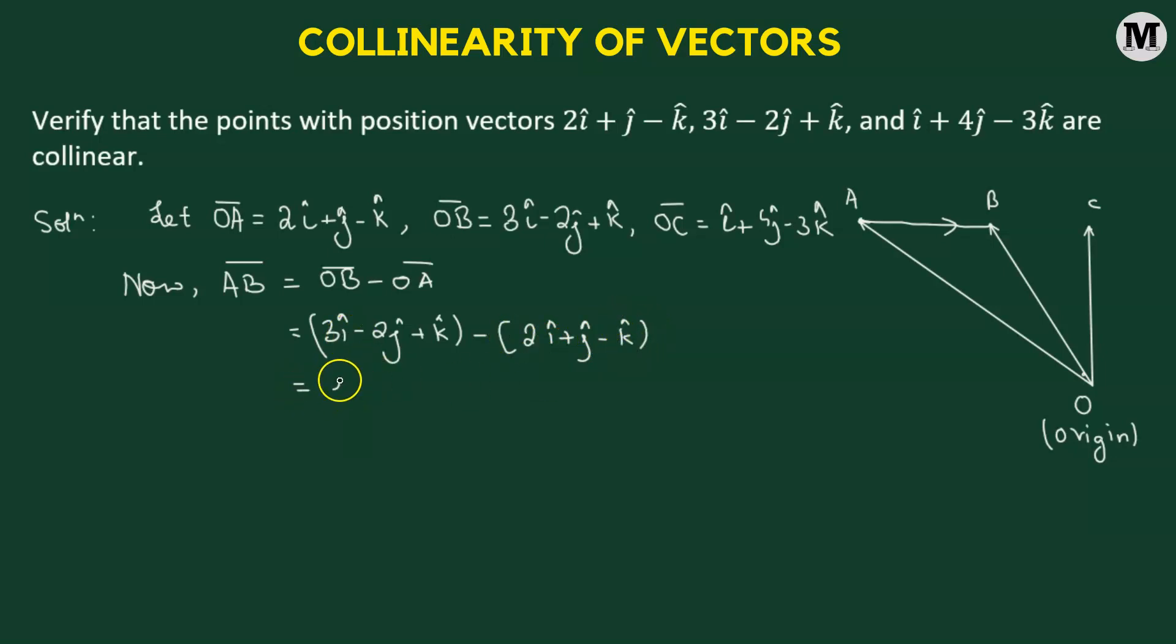Now, 3i cap minus 2i cap will be simply positive i cap. Negative 2j cap minus j cap will be negative 3j cap. And then we have k cap negative of negative k cap. That's going to give us 2 times k cap. We're going to label this as number 1.